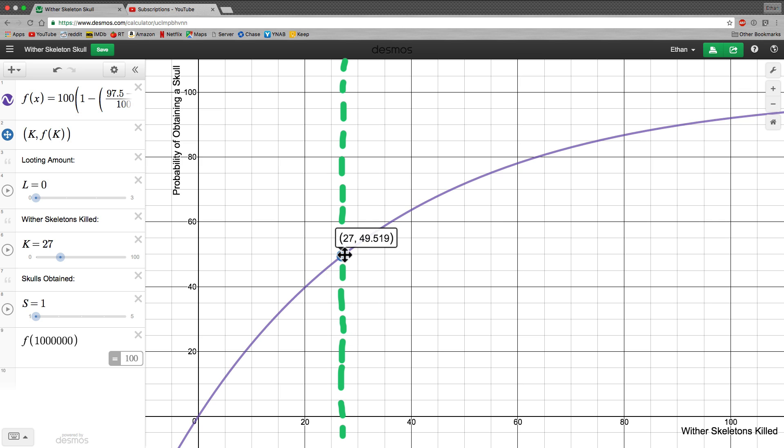Since this is the median, if it takes you less than 27 skulls with no looting, you are getting lucky. You are in the 50% lucky crowd. And if it takes you more than that, then you're in the 50% unlucky crowd. So this is the exact divide where you could divide everyone between getting unlucky and lucky.